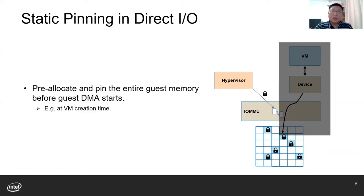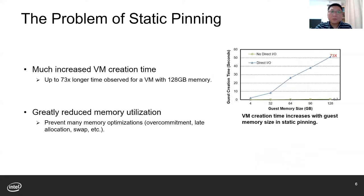So the hypervisor must pre-allocate and pin the entire guest memory before the guest DMA operations, for example during VM creation time. The problem of static pinning is quite obvious: we have to tolerate much increased VM creation time and greatly reduced memory utilization. Advanced features like page migration, memory over-commitment, and late allocation and swapping are not possible in static pinning, because the entire guest memory must be statically pinned during the whole life cycle of the guest.